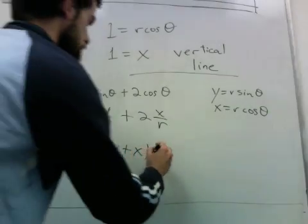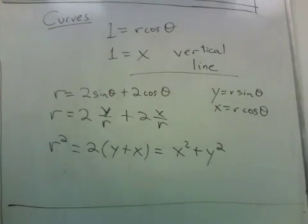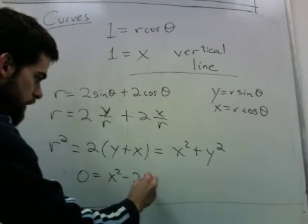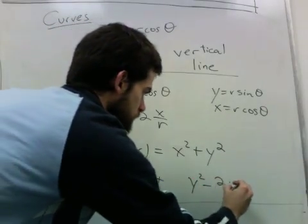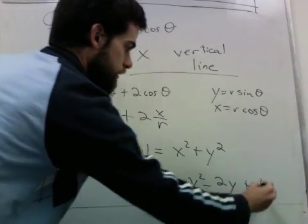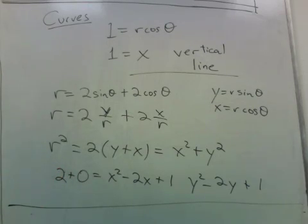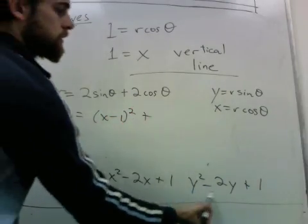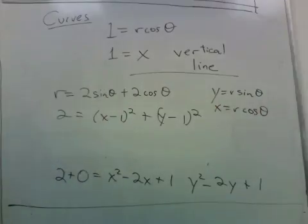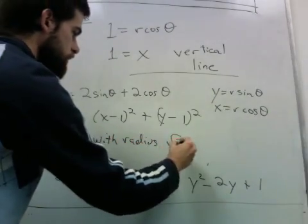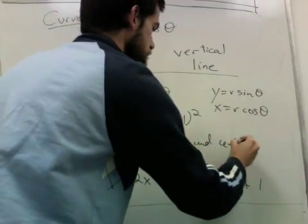We know r squared is x squared plus y squared. And depending on how well you know your conic sections, this turns out to be a circle. So let's move everything to this side to get 0 equals x squared minus 2x plus y squared minus 2y. And then I'm going to complete the square. I'll add 1 here and add 1 here and add 2 to the other side. That leaves 2 equals x minus 1 squared plus y minus 1 squared. And this is a circle with radius square root of 2 and center 1 comma 1.